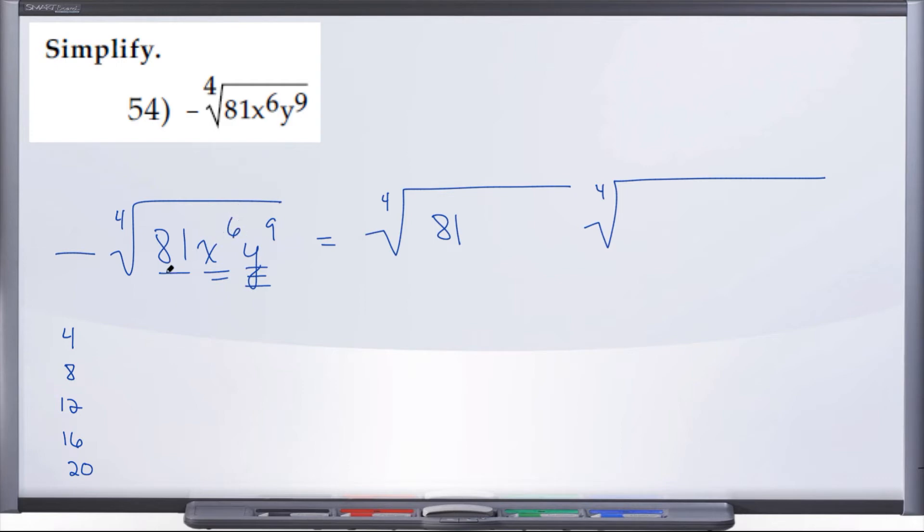But what is the next number below six, down from six, smaller than six, that is a multiple of four? Well, four, right? The next number down from six, smaller than six, that's a multiple of four is four. So when we go to break up x to the sixth, x to the four is good, x to the second is bad, and four plus two gives us six.